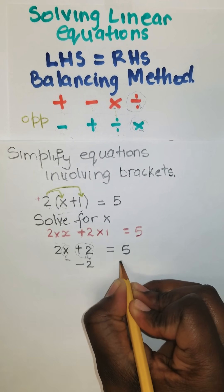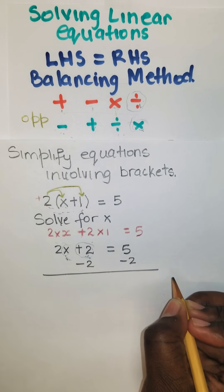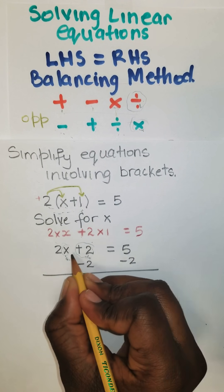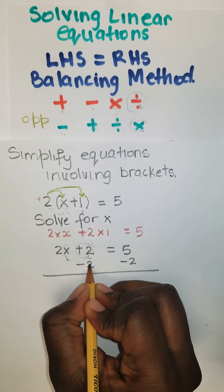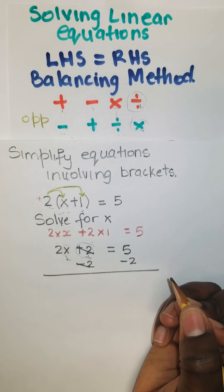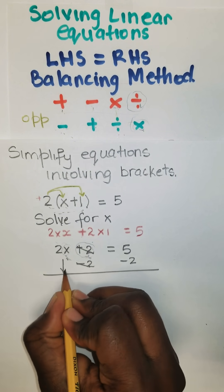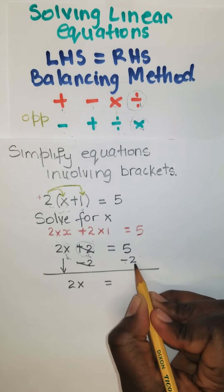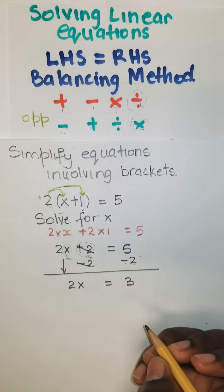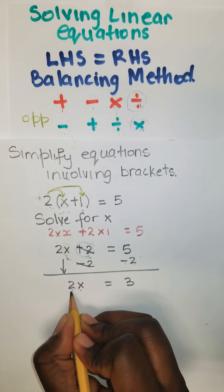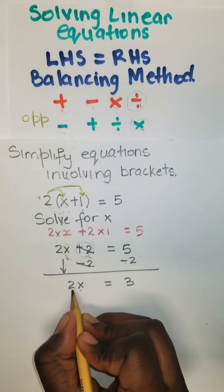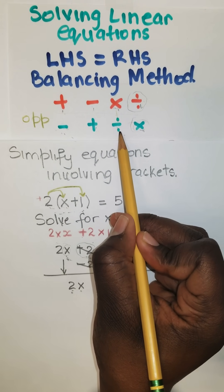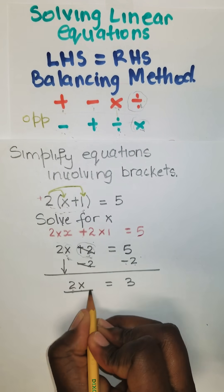So we subtract 2 from both sides. 2 subtract 2 cancels. So on this side, we have 2x remaining is equal to 5. 5 subtract 2 is 3. Between these two terms, they are multiplying, so we do the opposite operation, which is division. So we divide by the coefficient, which is 2, on both sides to balance the equation.